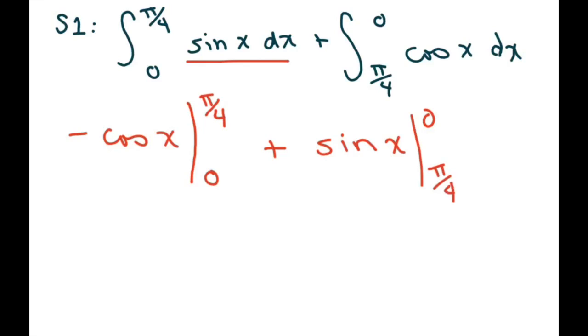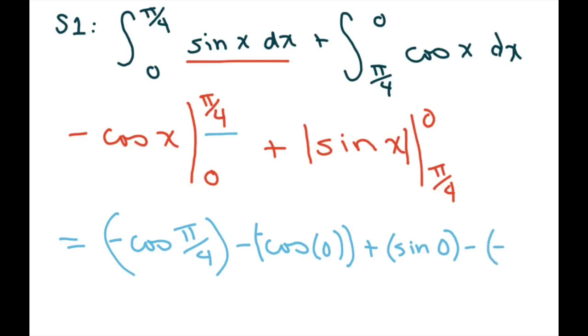Now if you want, you can do this. So when we evaluate this we get negative cosine of pi over four minus cosine of zero, minus a negative cosine of zero, and then we do the other one plus sine of zero minus sine of negative pi over four.